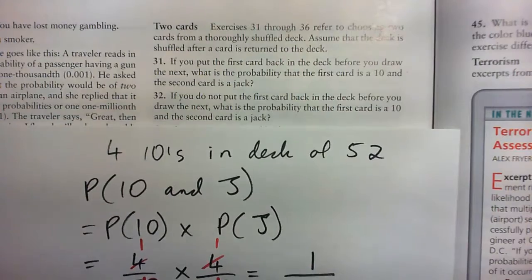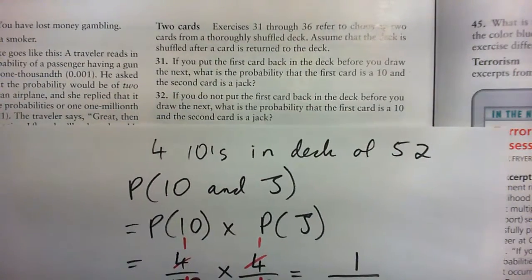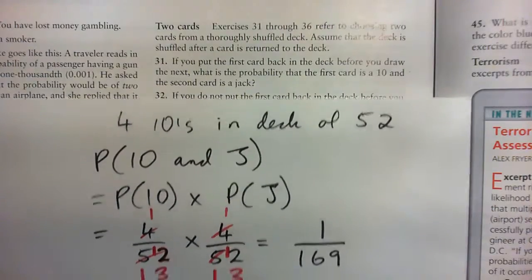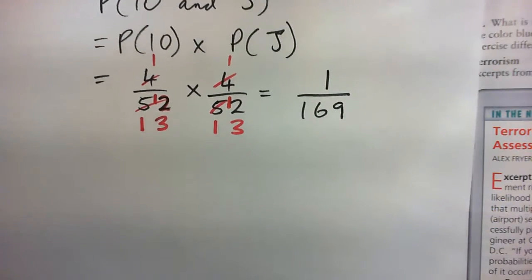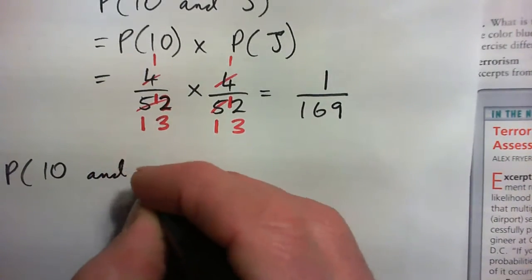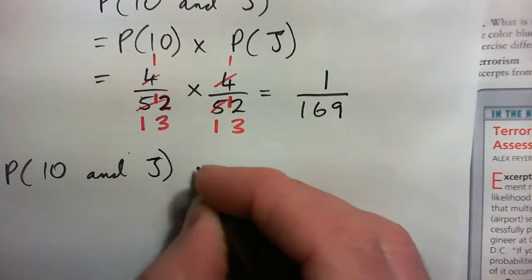So this time, it's a little different. Where should I do this? Okay, I'll do it here, I guess. So probability of 10 and then jack this time.